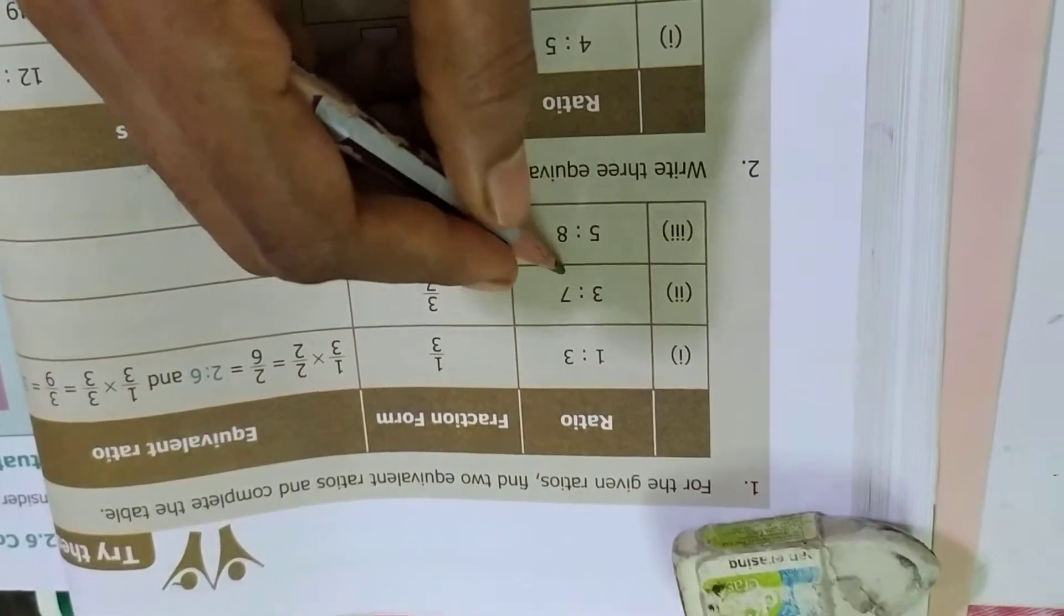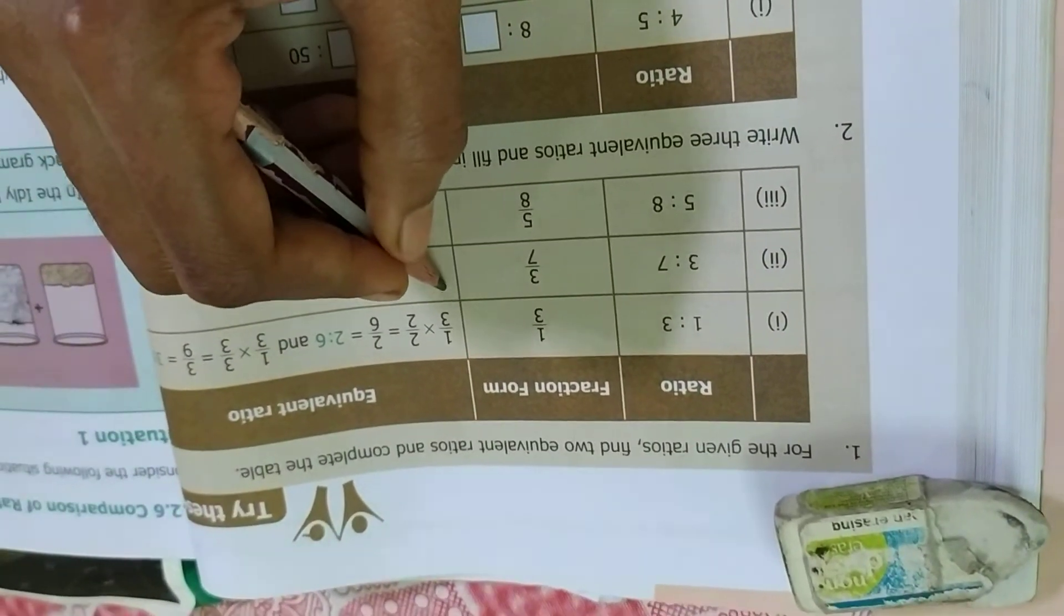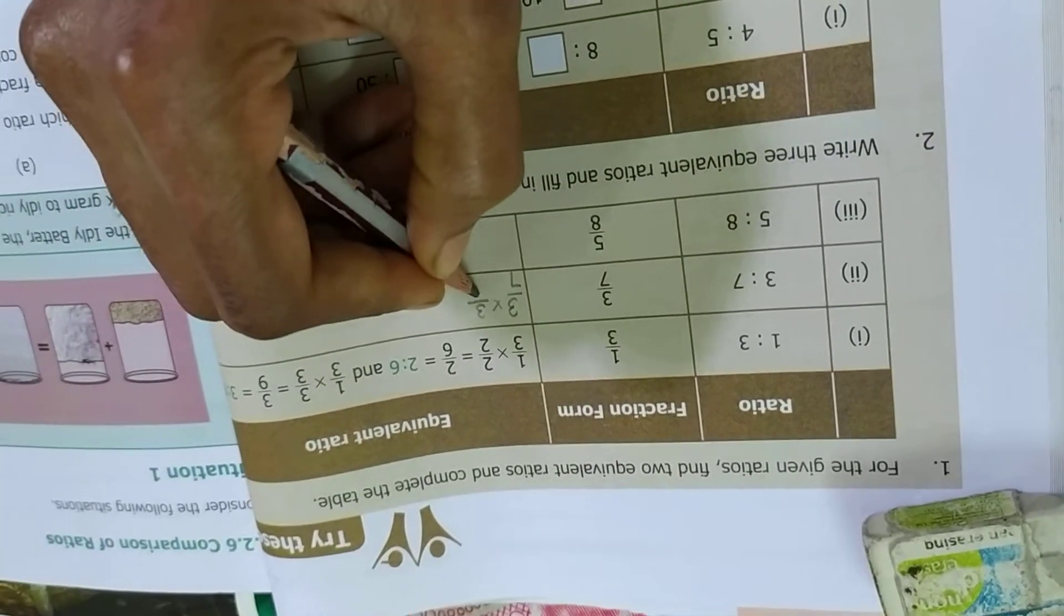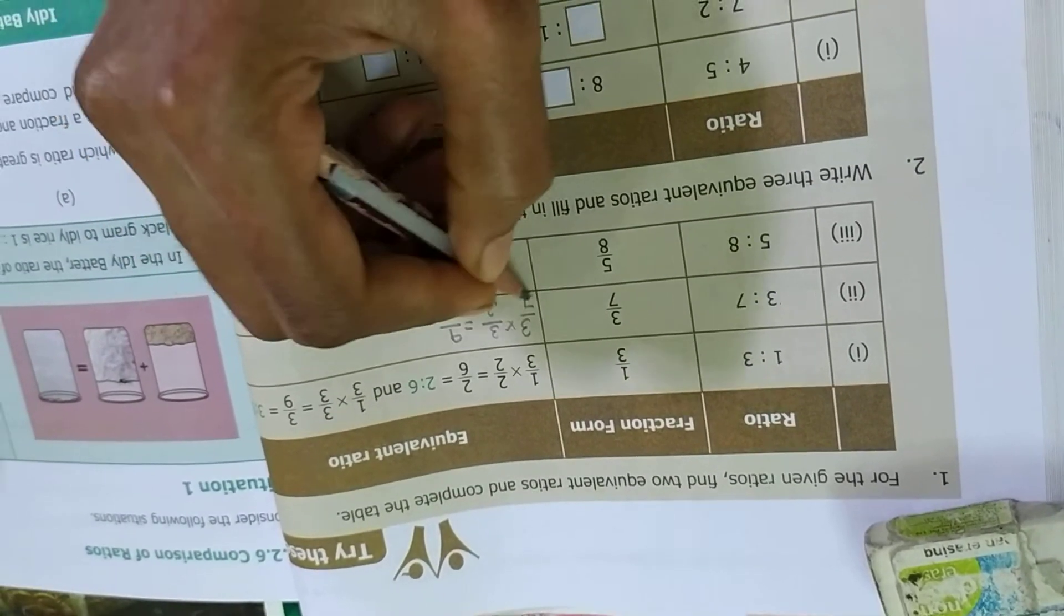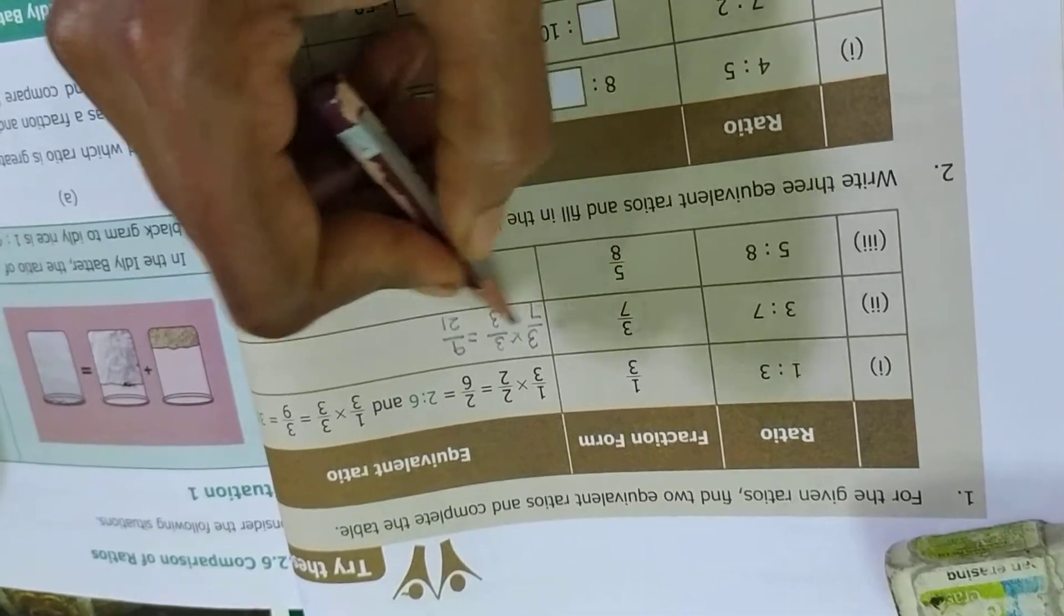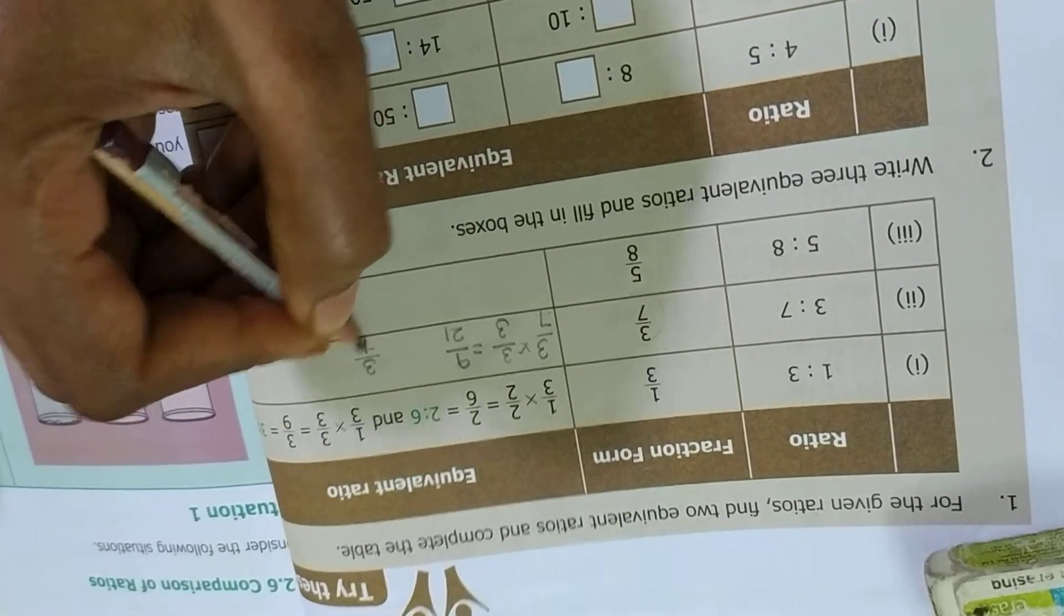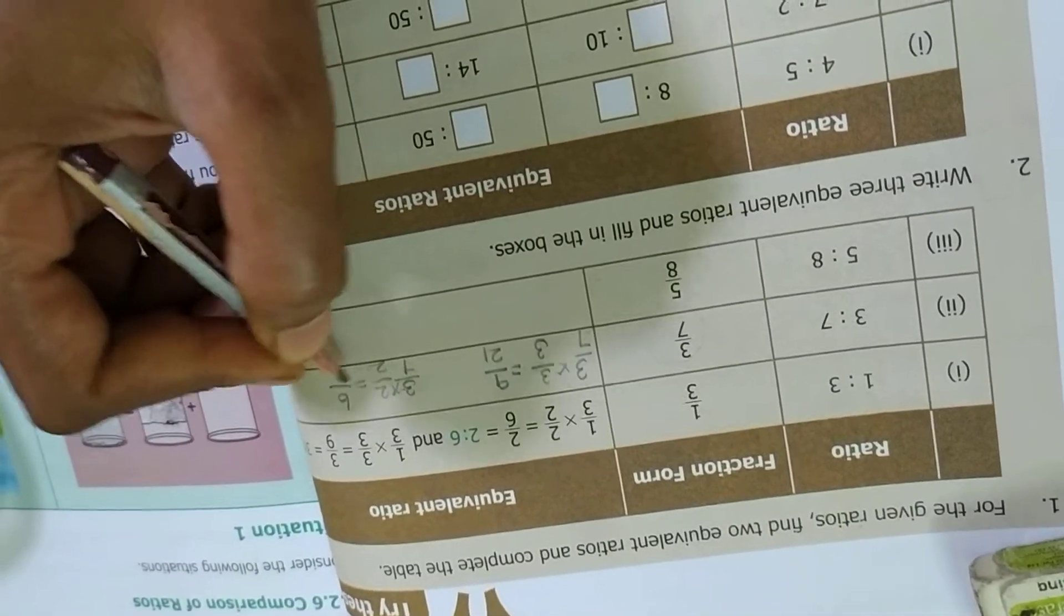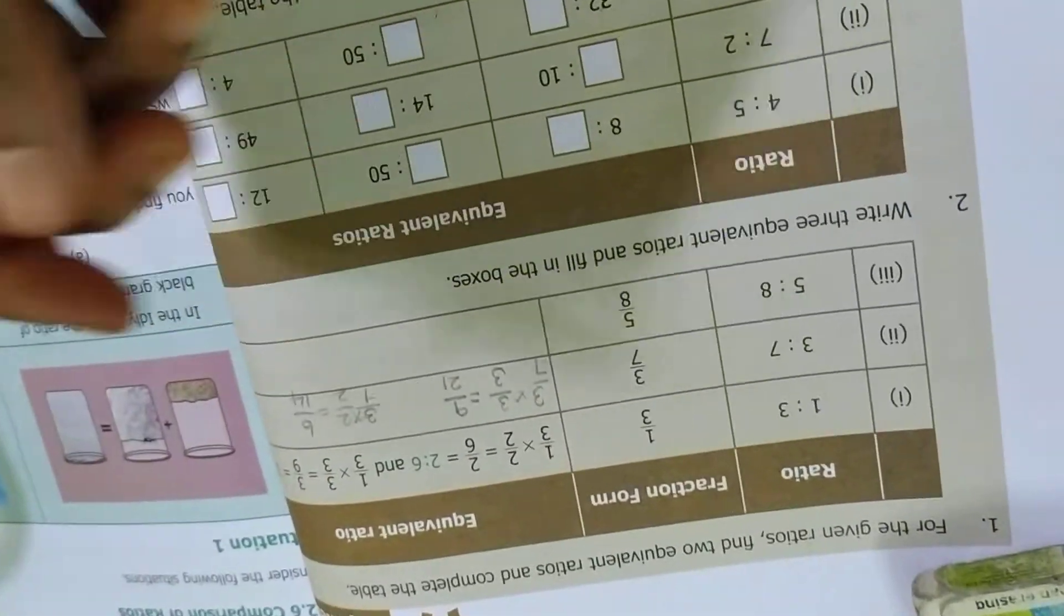Then 3 is to 7, which one is the equivalent ratio. So I am having 3 by 7. I am multiplying 3 by 3, 3 times 3 is 9, 7 times 3 is 21. If I am cancelling this, this is equivalent to this. Same, 3 by 7 times 2 by 2. Multiplying, so 6, 14. So each and everything is equivalent.